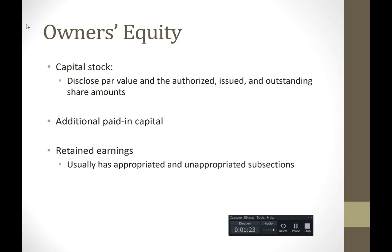So let's say I go ahead and incorporate in the State of California. They'll authorize me the maximum number of shares that I could issue. Let's say that our shares authorized were 10,000. Then when a company goes out and repurchases its own stock in the open market — can your company do that? I'm Tesla, I go out and I buy my own stock.